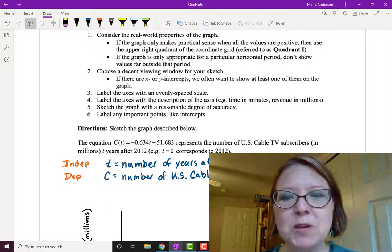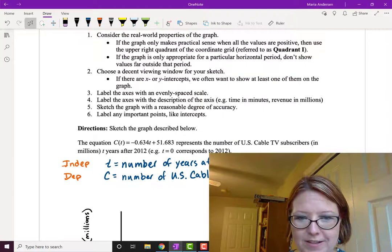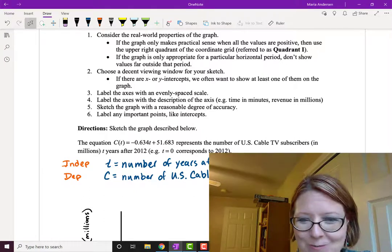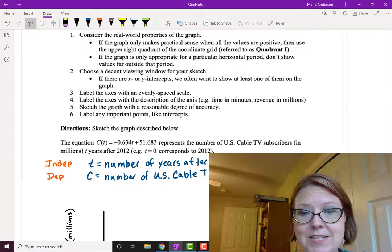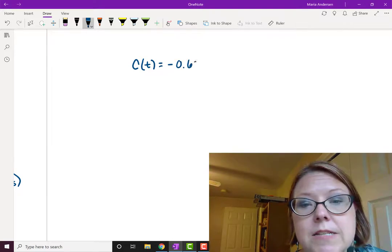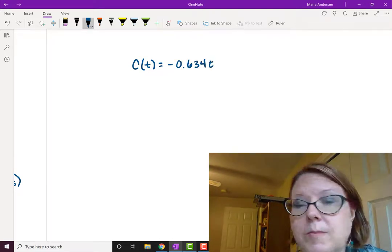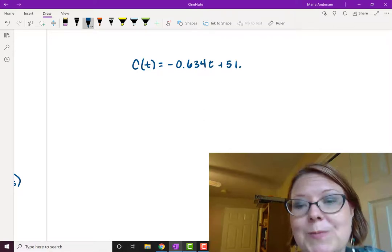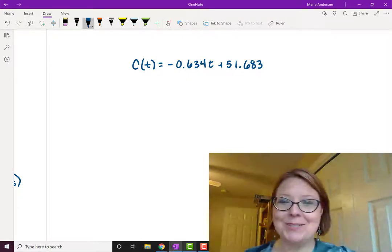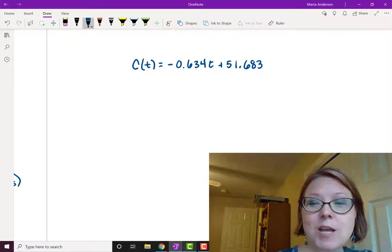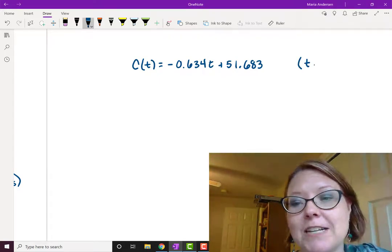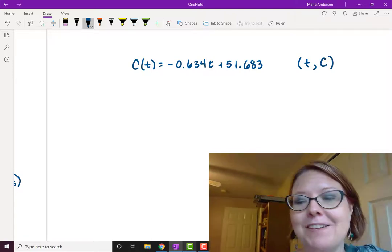If there are x or y intercepts, we often want to show at least one of them on the graph. In this case, it might be useful to calculate the x and y intercepts, or as it would be in this problem, the t and C intercepts. C(t) = -0.634t + 51.683. Real world problems don't always have nice numbers, and that's why we practice with them.